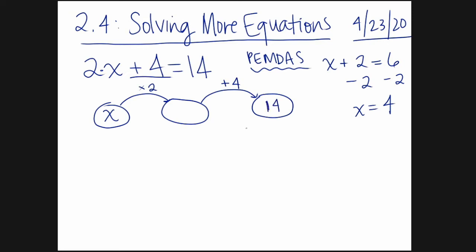So to solve this equation, I'm going to have to use reverse PEMDAS, or as I like to call it, SADMEP. So SADMEP is going to help us solve our equation. We're going to take each step backwards. Instead of multiplying first, we're going to undo the addition first. So I'm going to subtract 4, that's going to give me 10.